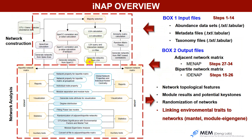This is the workflow of INAP from network construction to network analysis. The input files can be tabular files, including abundance datasets, metadata and taxonomy files. Using different pipelines, output files include unipartite network metrics and bipartite network metrics. After network construction analysis, users can get network topological features, module results with potential keystones, and randomization of networks.